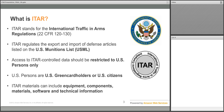Technical data requiring ITAR controls is defined as information which is required for the design, development, manufacture, assembly, operation, repair, testing, maintenance, or modification of defense articles. This includes information in the form of blueprints, drawings, photographs, plans, instructions, or documentation.